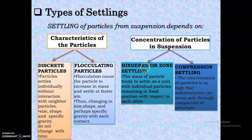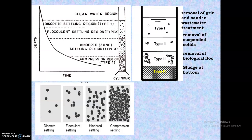The third type is hindered or zone settling, where the mass of particles tends to settle as a unit, with individual particles remaining in fixed positions relative to each other. Each particle acts as an individual unit and they settle down without hindering or causing any harm to the other particles.